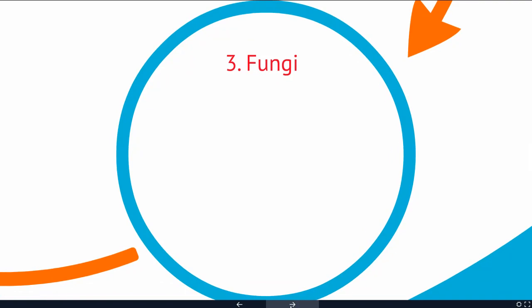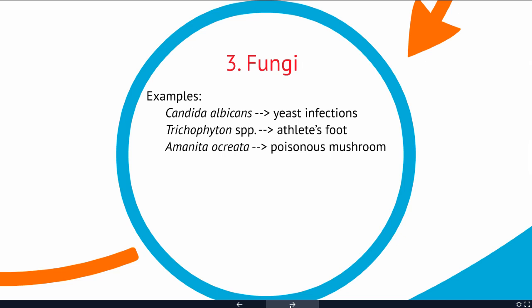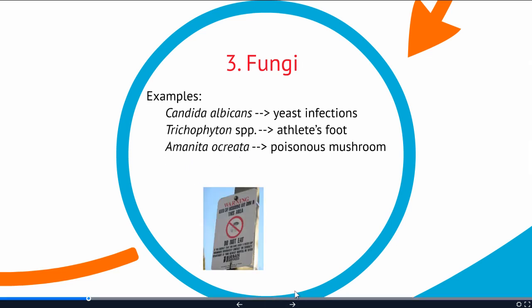The next kind of pathogen are the fungi. Not all fungi are pathogenic, but here are a few. There are the yeasts, which can cause yeast infections and athlete's foot. Both of these kinds of fungi are going to be microscopic, and then we have the macroscopic, something like the very, very poisonous mushrooms. The common name for this one is the death cap, and just a few bites of this mushroom can kill you.